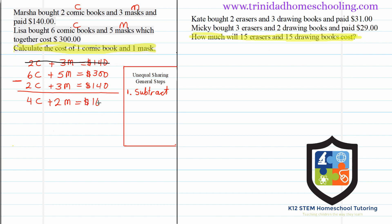The second step is to divide something. In bar modeling we also do these steps: subtract the uneven part, divide to find each equal portion, then add it back. The bar modeling method is more of a visual representation — students who need that extra visual aid will find it the best method. Now we need to decide what to divide.